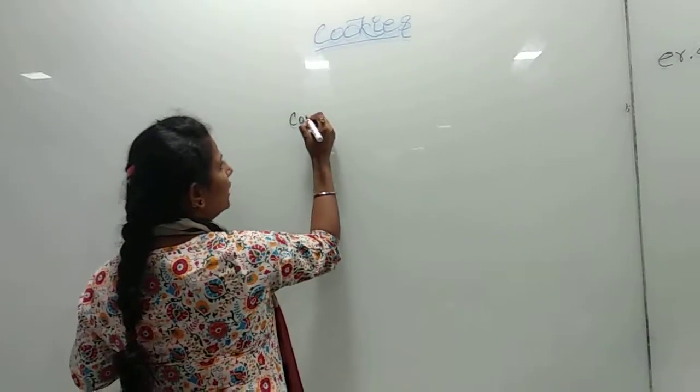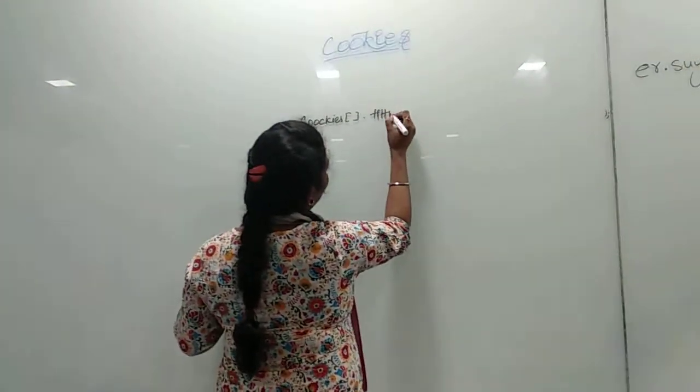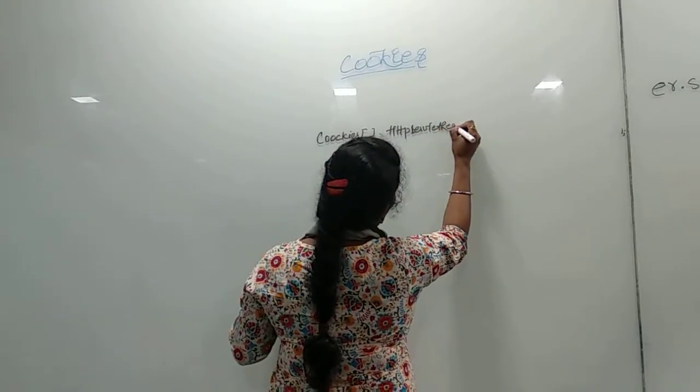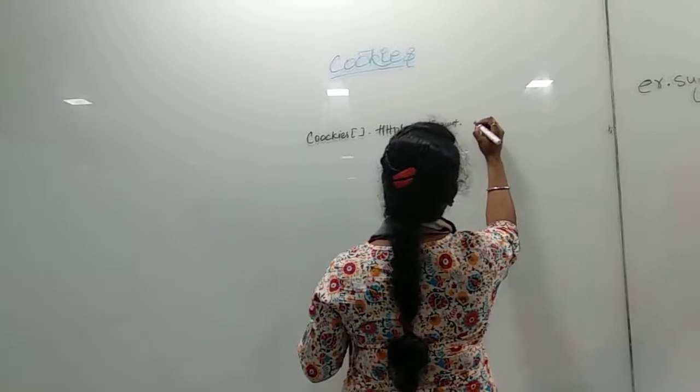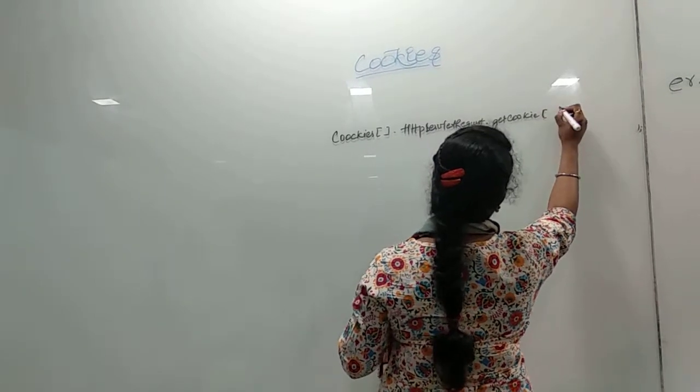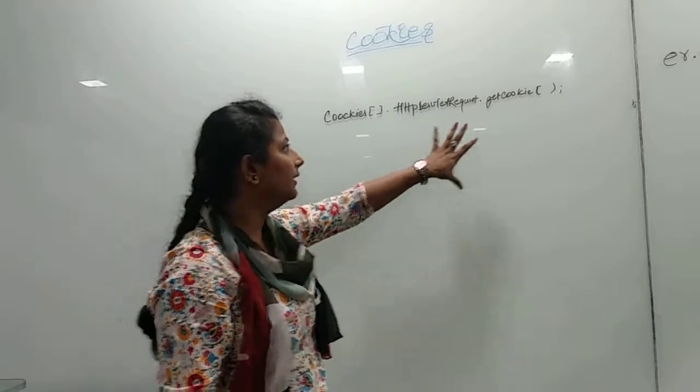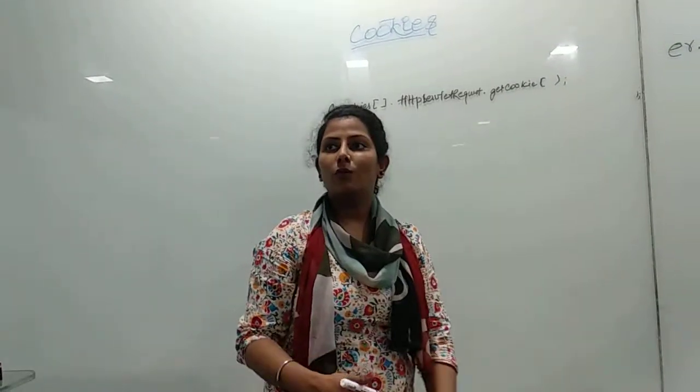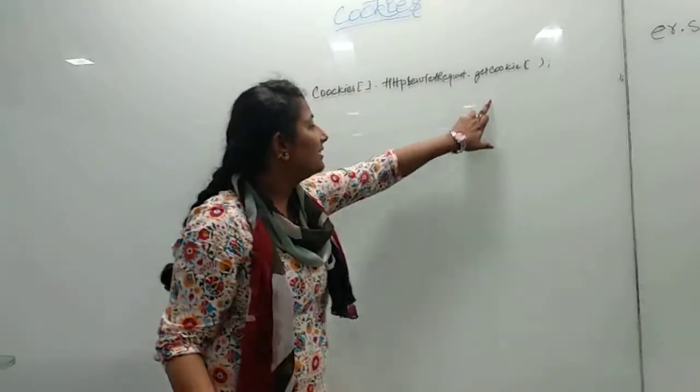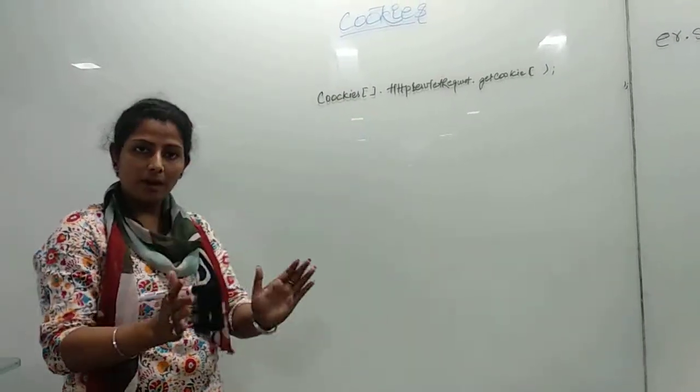For that we have a method called getCookies. Using this getCookies method, we can get to know what are the various cookies that are available in our browser. Its return type is, as we have seen, an array of cookies. So it will return an array of the cookies.